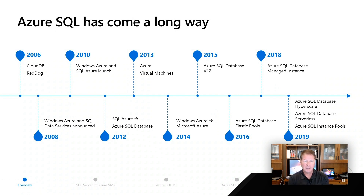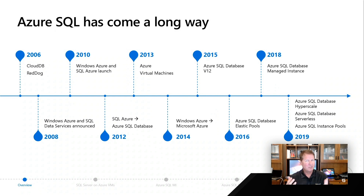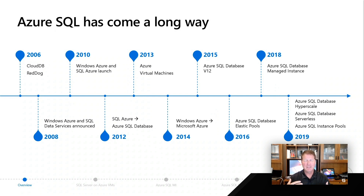There were other major product announcements and changes that significantly altered the landscape. Azure Virtual Machines in 2013 was a very big milestone, because before that you didn't have the ability to do a complete VM. I look at 2015 as a huge landmark for us — we launched something called V12. That was a version of Azure SQL which underneath the covers changed the architecture to provide a lot more resiliency and performance for our customers in the cloud. Then in 2016, we introduced things called elastic pools, which we're going to mention in our videos.